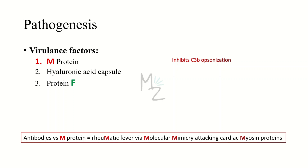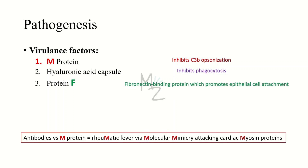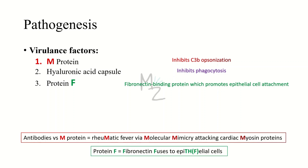The second virulence factor is the hyaluronic acid capsule, which inhibits phagocytosis — the end result of opsonization — connecting it with the first factor. The third is Protein F, a fibronectin-binding protein that promotes epithelial cell attachment. As a mnemonic: Protein F (fibronectin) fuses to epithelial cells — fibronectin starting with F, fuses starting with F, epithelial containing 'TH' replaced by F — so protein F fibronectin fuses to epithelial cells.